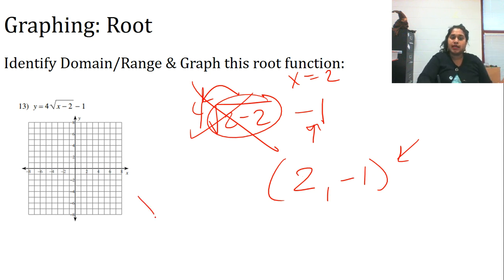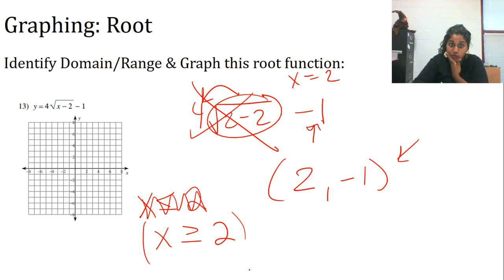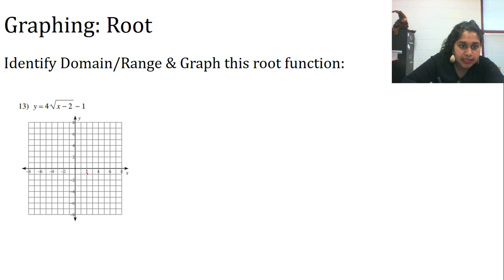x has to be greater than or equal to 2, because if x is any less than 2, you have a negative underneath your square root, which is not possible for an even root. At (2, -1) is our starting point, and we also had another intersection point near (2 1/16, 0). Nothing can possibly exist to the left of x = 2. Remembering what a root function looks like as a parent function, that's our basic sketch.